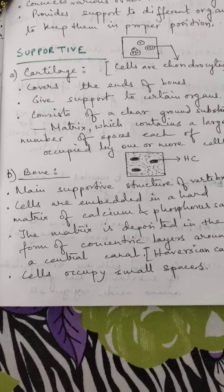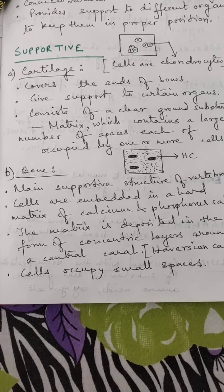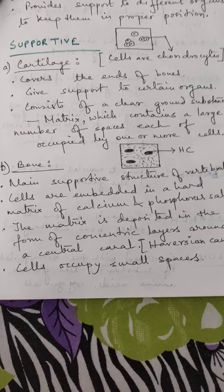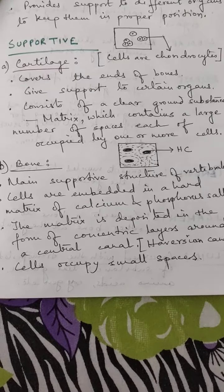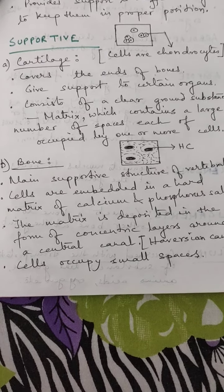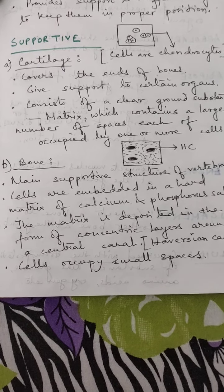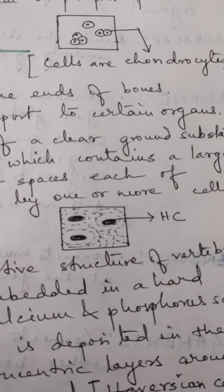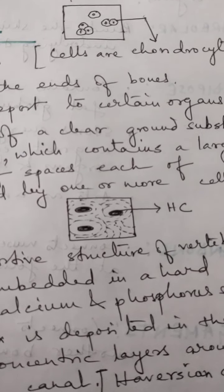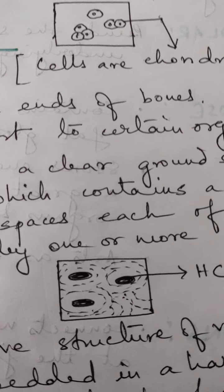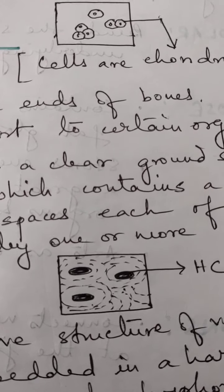First we'll come to the supportive type — cartilage. It covers the ends of bones and gives support to certain organs. It consists of a clear ground substance called matrix, which contains a large number of spaces, each occupied by one or more cells. The cartilage cells are known as chondrocytes. In the cross section of the cartilage, we can see empty spaces in which some cells are floating. These cells are the chondrocytes, within which they have a nucleus, and the empty space is known as lacunae.